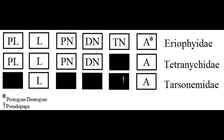Tetranychids have a similar life stage history. They have pre-larva, larva, protonymph, deutonymph — no tritonymphal stage — and the adult stage. They just haven't developed the same life stage for whatever reason, and there's nothing really significant about that change.